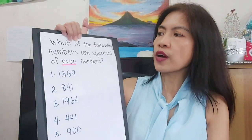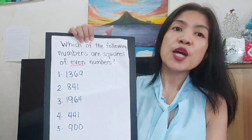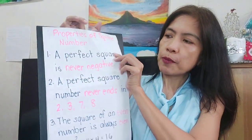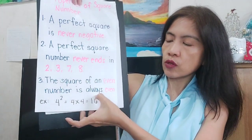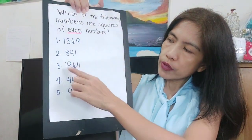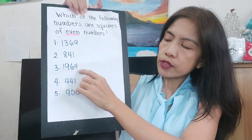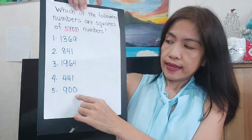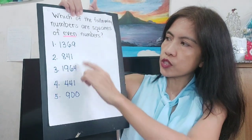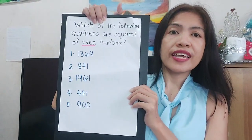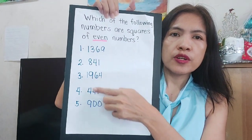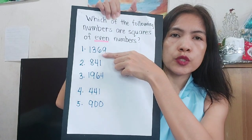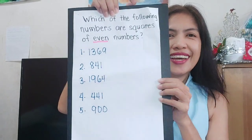Another question: which of the following numbers are squares of even numbers? The square of an even number is always even. So from our choices, 1,964 and 900 are the even numbers. The rest are odd numbers. If you use a calculator, those even results will confirm even squares, while the others give odd results.